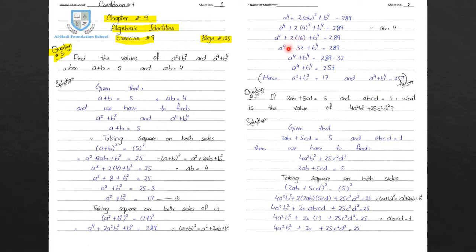A raised to power 4 plus 32 plus b raised to power 4 is equal to 289. Since 32 is positive, when we move it to the other side it becomes negative. So a raised to power 4 plus b raised to power 4 is equal to 289 minus 32, which equals 257.